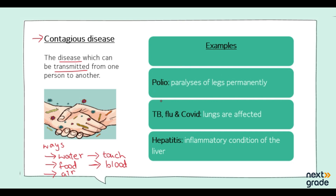Now let's discuss examples of contagious diseases. First, we have polio. Polio is caused by a type of germ called a virus.